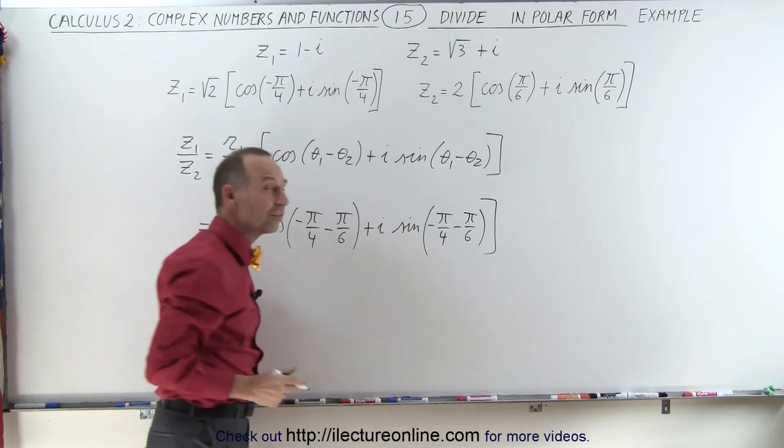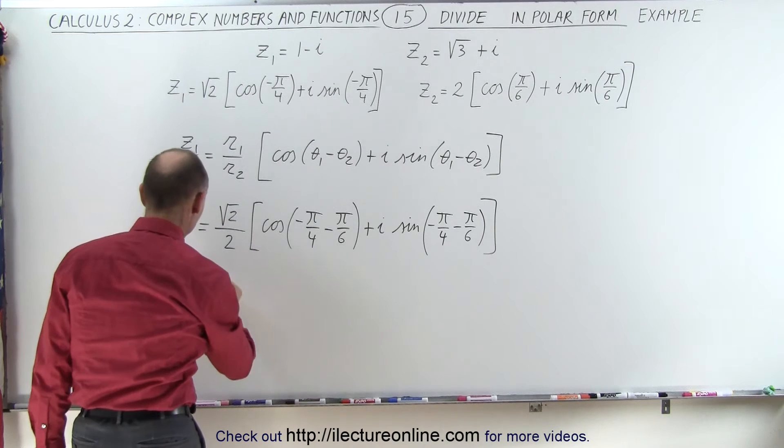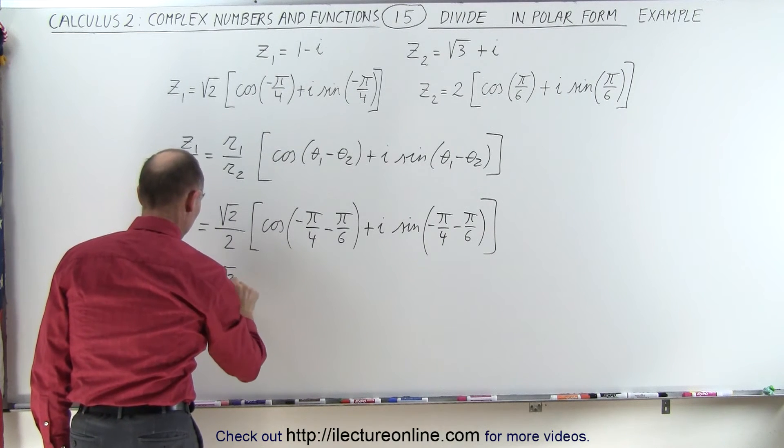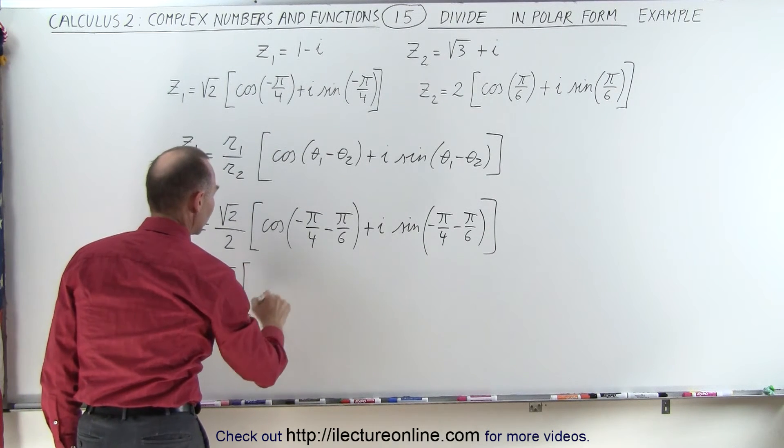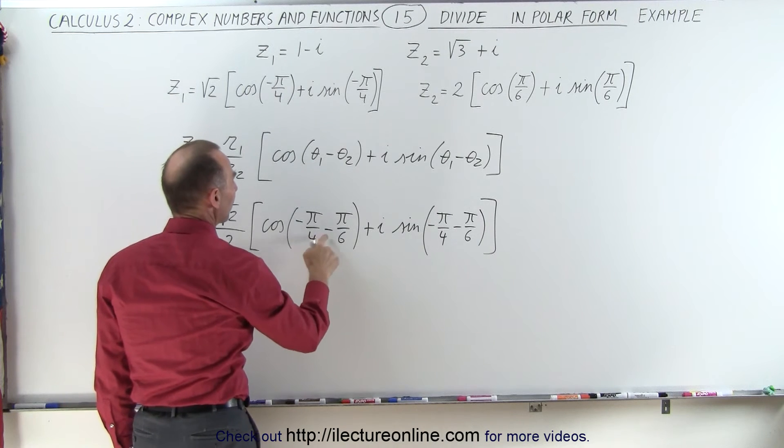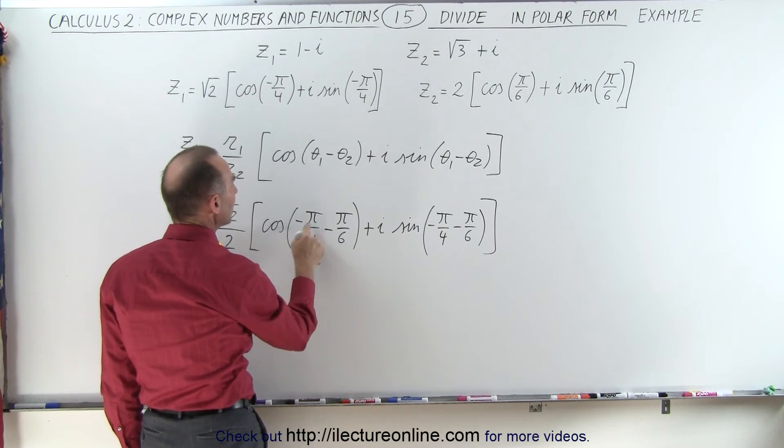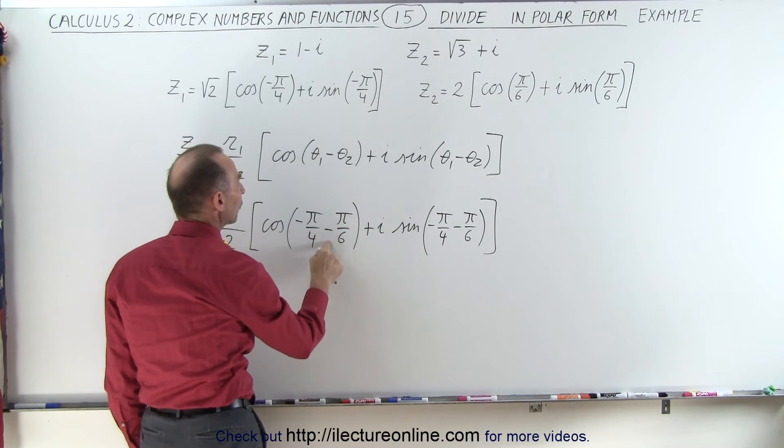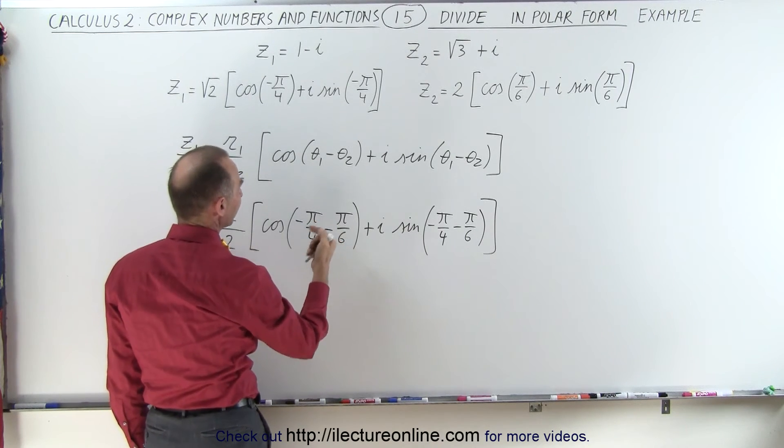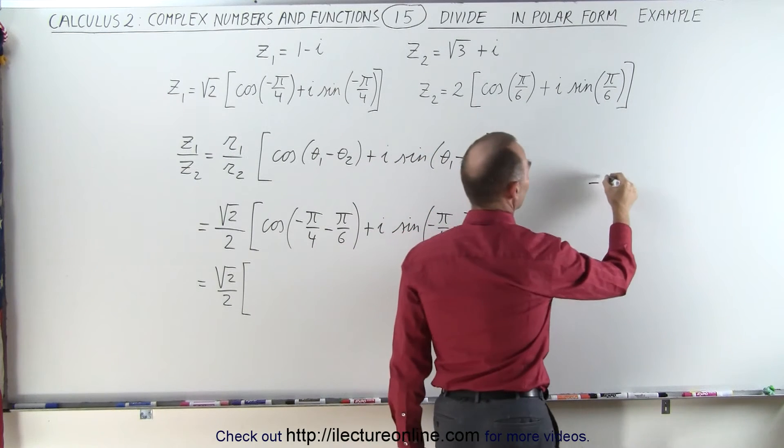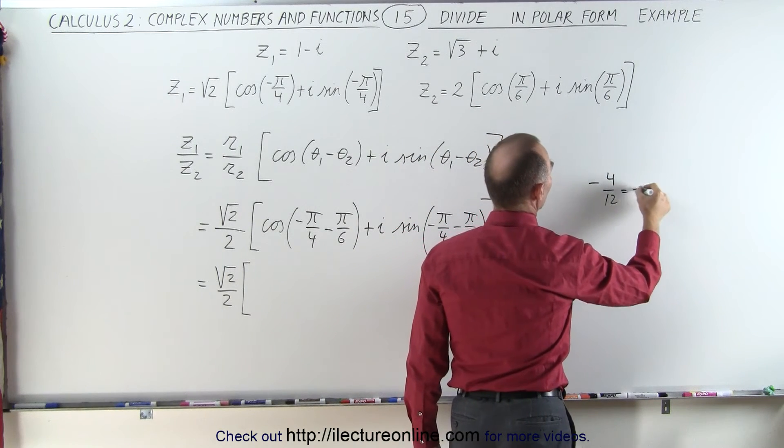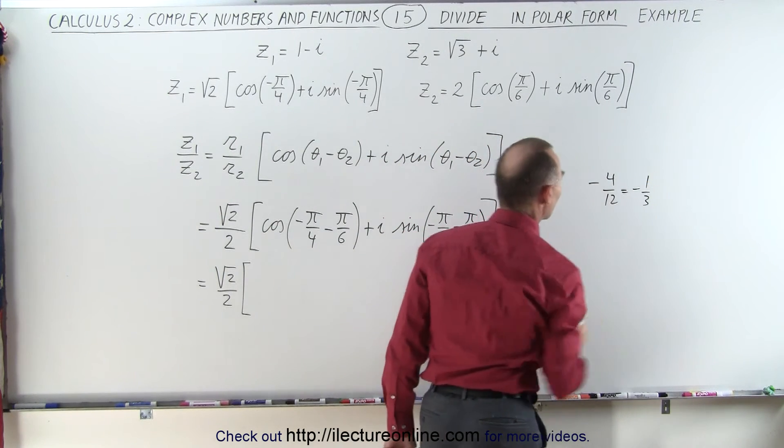Now let's simplify this and see what it looks like in final form. The square root of 2 over 2 times: minus pi over 4 minus pi over 6. Common denominator is 12, that's minus 3 minus 1, that's minus 4 over 12, which is minus 1 over 3.